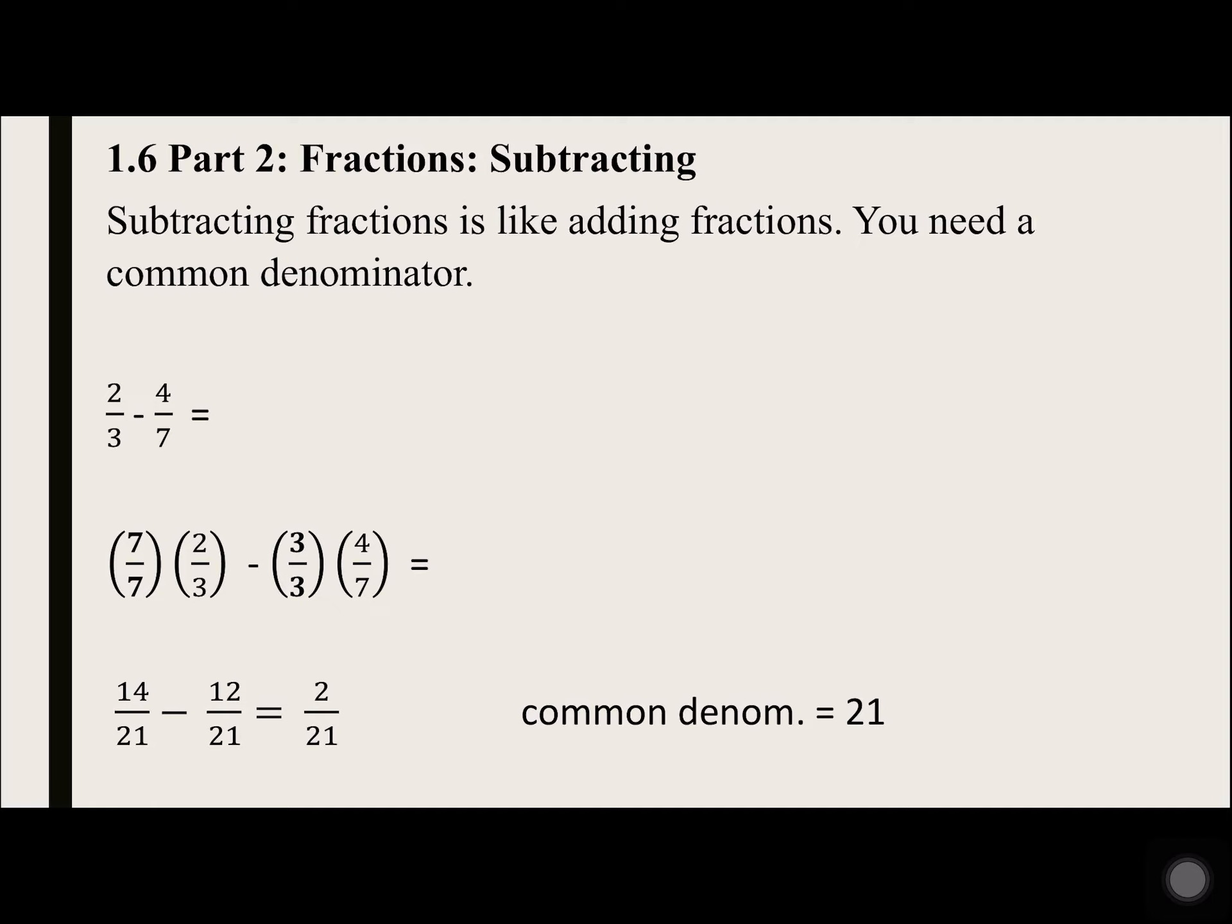So multiply top and bottom by 3. 3 over 3 times 4 over 7 is 12 over 21. Now 14 over 21 minus 12 over 21 equals 2 over 21.